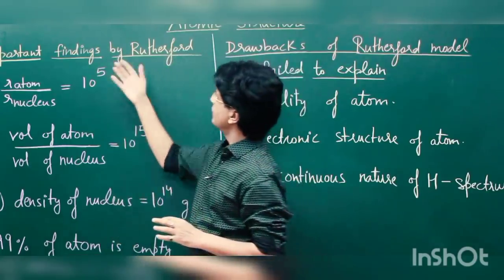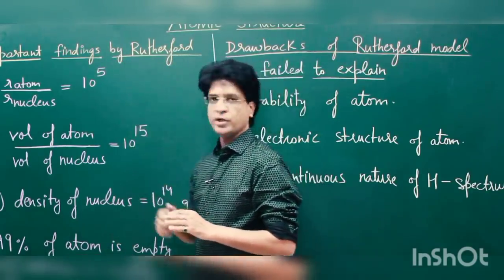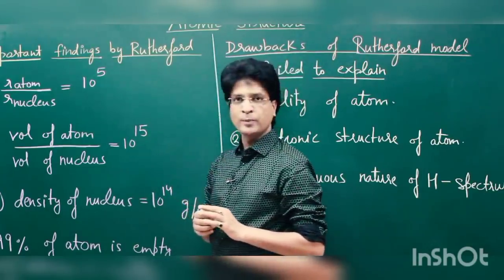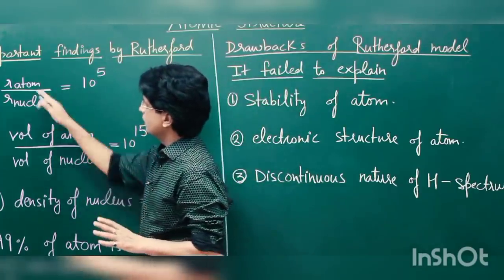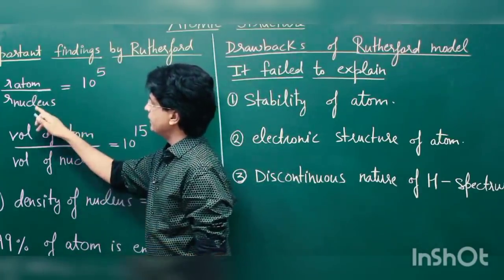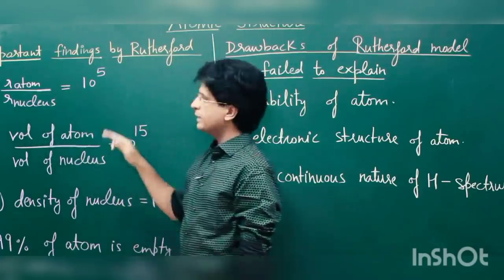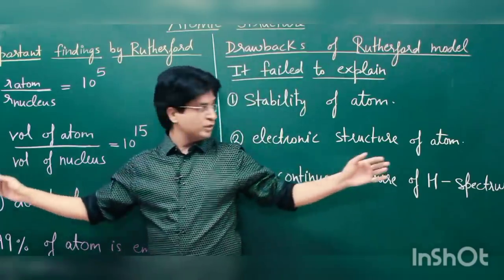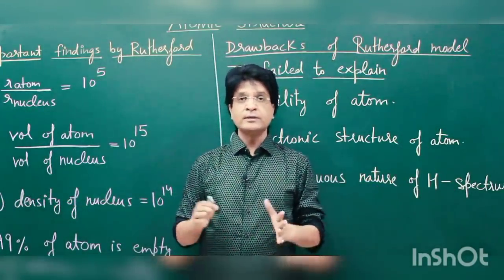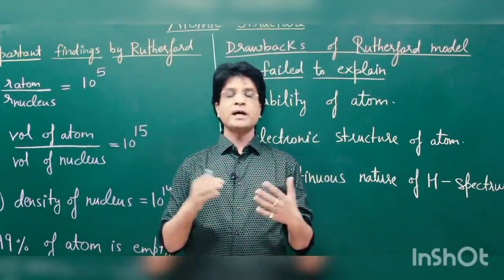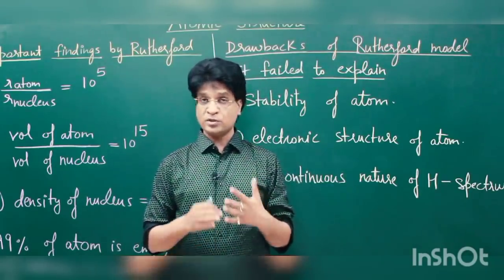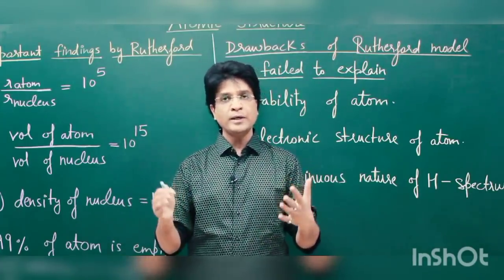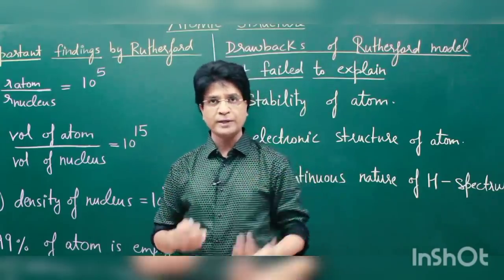Here are a few findings by Rutherford while investigating the structure of the atom. He said that the ratio of the radius of atom to the radius of nucleus is almost one lakh. That means if you take this board as the size of the nucleus, then almost entire South India would be the size of the atom — staggering. You can see how small the nucleus is compared to the size of the atom.